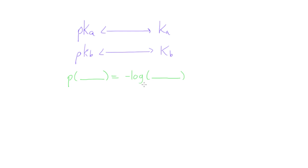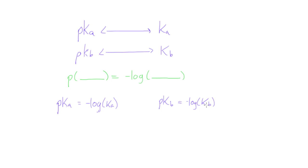This is a good shortcut to know. For example, if we want to know the PKA, this is equal to the negative log of KA. Likewise, if we want the PKB, this is just the negative log of KB. Now, if we have PKA and we want KA, we just use a few log tricks, and KA is just equal to 10 to the power of negative PKA. Same thing — if we want KB, that's all it is: 10 to the negative PKB.